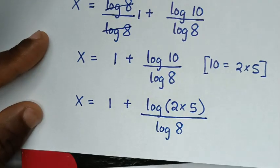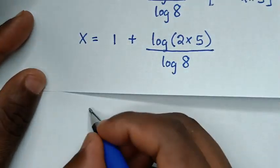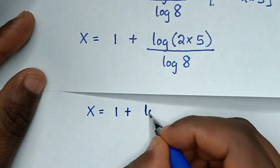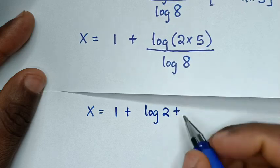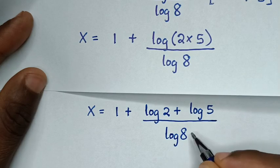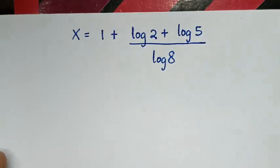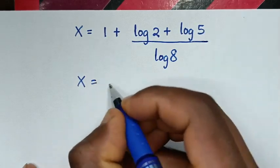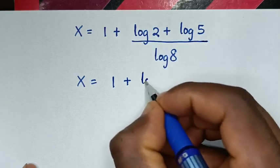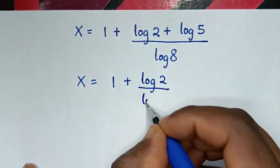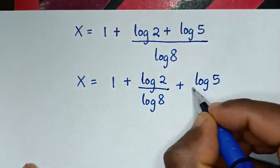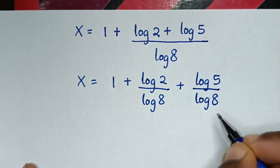Then in the next step it will be x is equal to 1 plus — here log of 2 times 5 is the same as log of 2 plus log of 5, over this log of 8. Then in the next step, it will be x is equal to 1 plus — we'll divide by log of 8 in here and here. So it will be log of 2 over log of 8 plus log of 5 over log of 8.